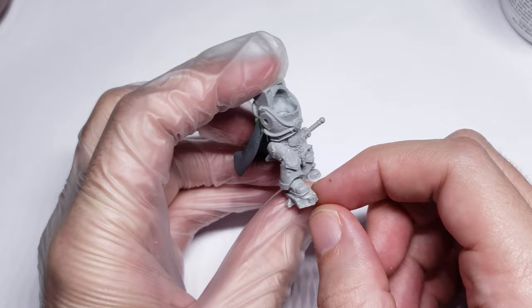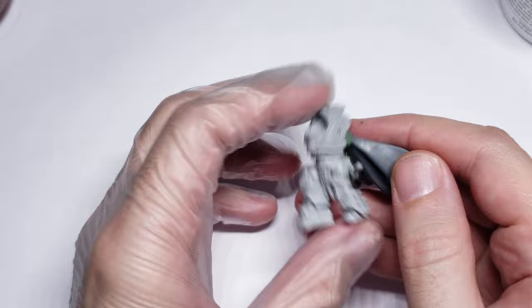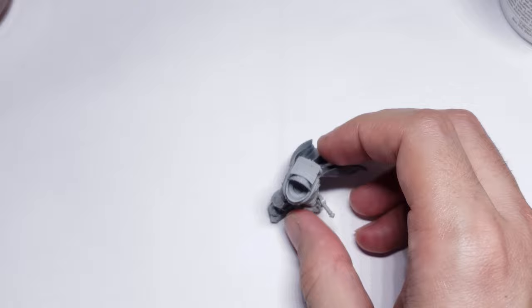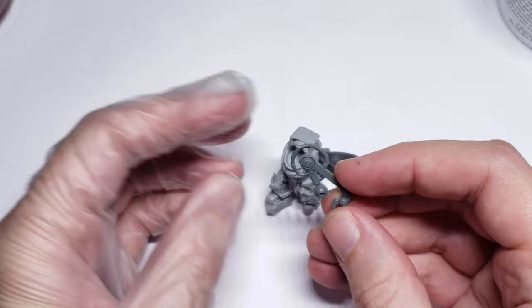This video is going to be a little different than normal, because instead of going through the entire process of how I converted this Iron Warrior Warsmith, I'm really just going to be focusing on how I made his servo arm, and hopefully it provides some inspiration to you on how to mount a servo arm to cataphract armor for any Warsmith, Iron Father, Tech Marine, or other conversion you're planning on doing.